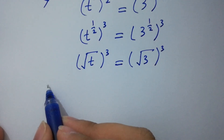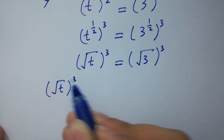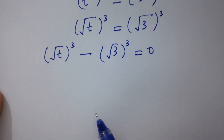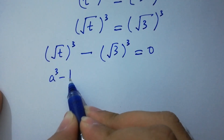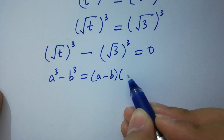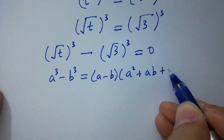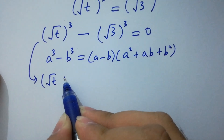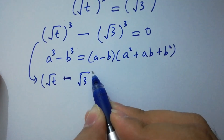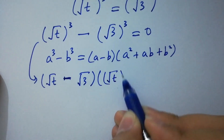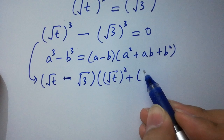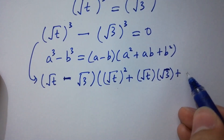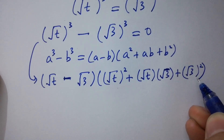Then we have square root of t, to the whole power 3, minus square root of 3, to the whole power 3, equal to 0. We apply the formula for a cubed minus b cubed, which equals (a minus b)(a squared plus ab plus b squared).